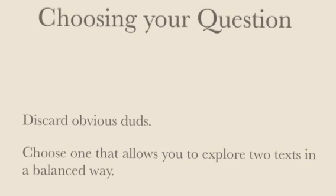When it comes to choosing your question, in the new exam format there are only three questions to choose from, so you don't have that enormous choice from the old days. Look at the three questions for your particular text genre. There's probably going to be some question that is an obvious dud — something that doesn't work at all with your text, or a type of question you're not prepared for. So you can just ignore those questions straight away. Then look at the ones remaining, and if you've got a couple left, see which ones will actually allow you to work with two of your texts in a balanced way.